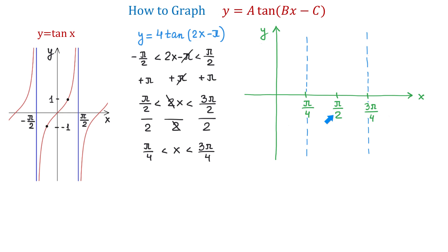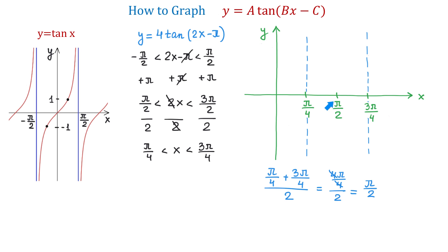If we would not have this value on the graph, then to find it we need to add pi over 4 and 3 pi over 4 and then divide the result by 2. Pi over 4 and 3 pi over 4 makes 4 pi over 4, divided by 2 gives pi over 2. Now once we know the x-intercept, we know that if we move halfway to the right the value of the tangent will be positive 4, because we have a 4 in front of the tangent, and halfway to the left the value will be negative 4.